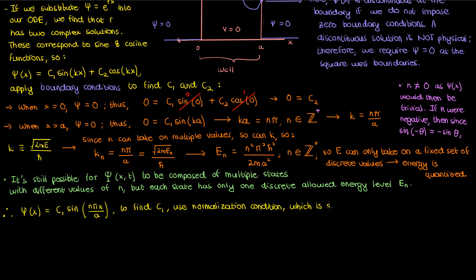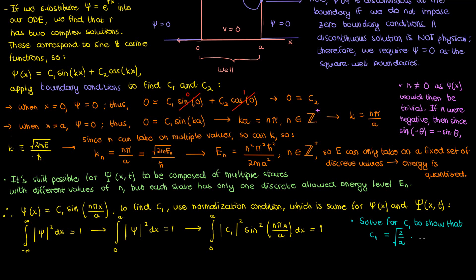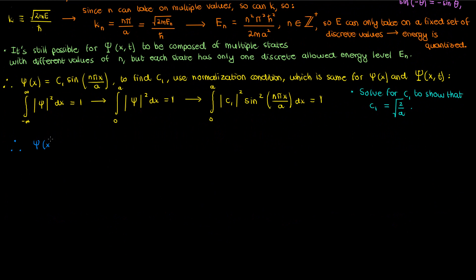Recall from my video on stationary states that the normalization condition for small psi is the exact same as the normalization condition for big psi. Now this integral from negative infinity to infinity can be changed to an integral from 0 to a because everywhere else small psi is just 0. If we plug in our small psi we end up with the integral of sine squared times c1 squared. If you use this equation to solve for c1 I invite you to show that c1 is just the square root of 2 over a and therefore our solution small psi is given by the square root of 2 over a times the sine of n pi x over a.